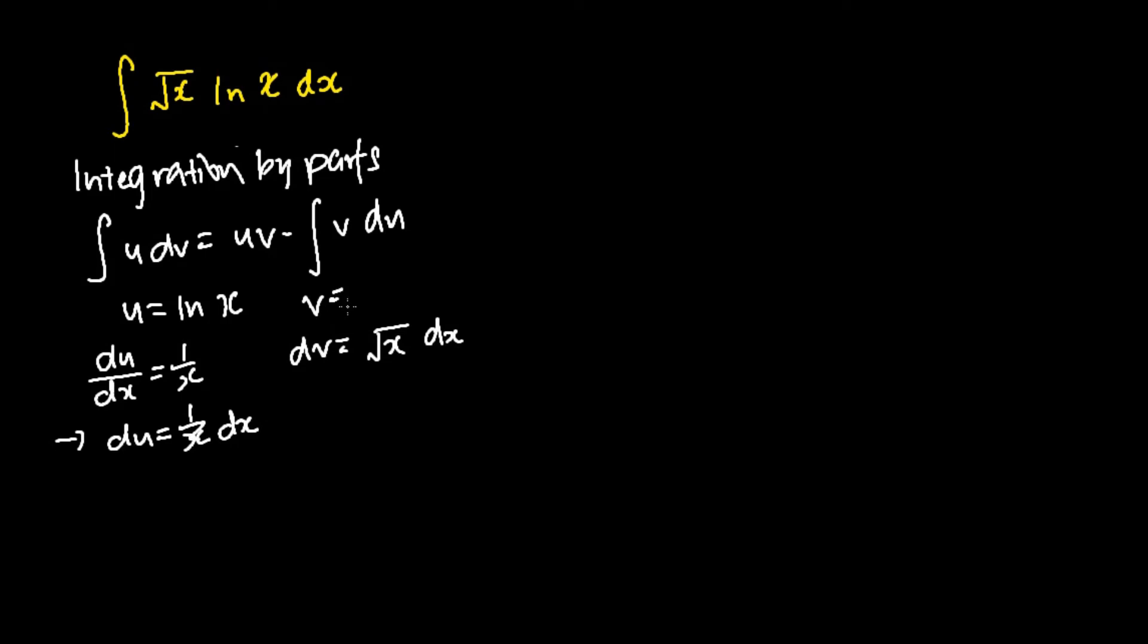To find my v, I will integrate dv, which means I will integrate the square root of x dx. I will get 2 over 3 x to the power 3 over 2.